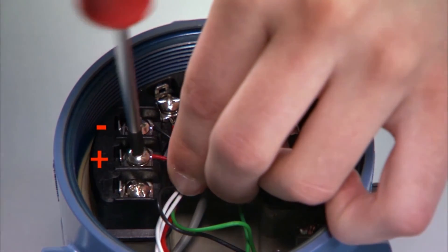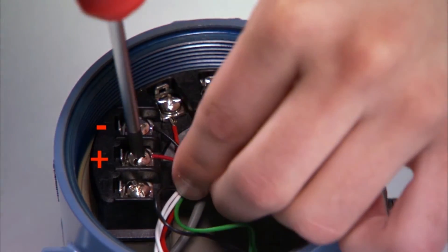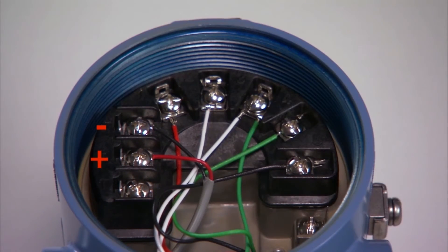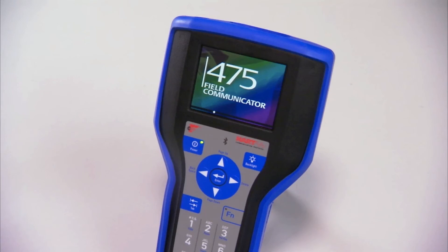Next, insert the power wires and attach to the positive and negative terminals. After wiring is complete, the field communicator, like the 475, can be used to configure the sensor.